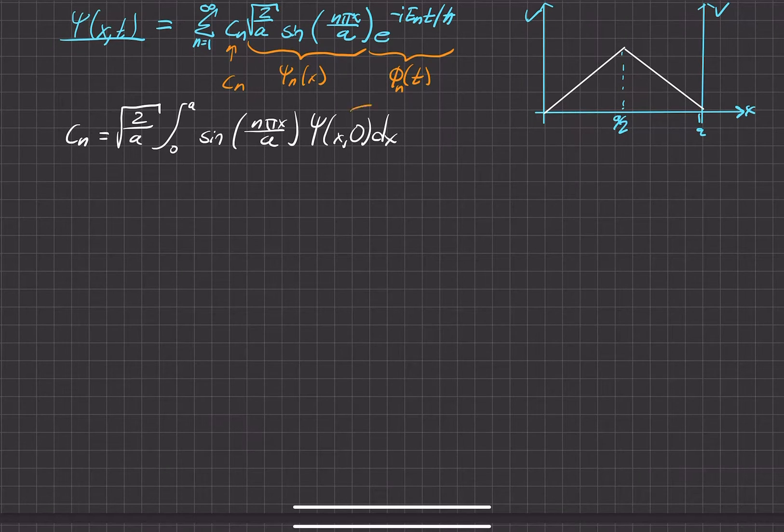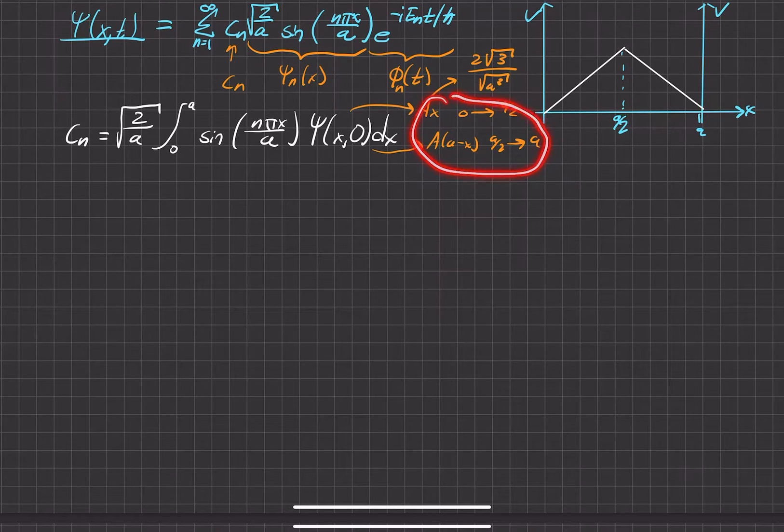And again, in the previous problem, we found that psi of x and t at t equals 0 is equal to A times x over the range from 0 to a over 2, and it is also equal to A times the quantity of a minus x from a over 2 to a. And we found that A was equal to 2 times the square root of 3 over the square root of a cubed. We found all this stuff in the first part of the problem.